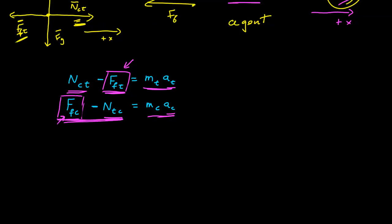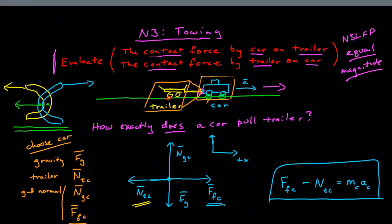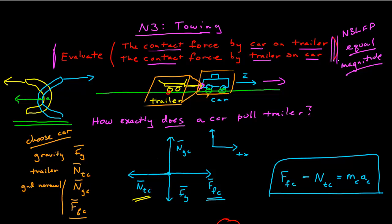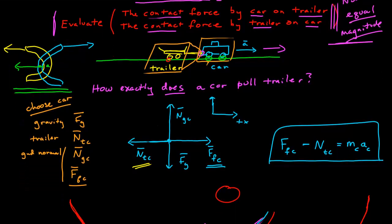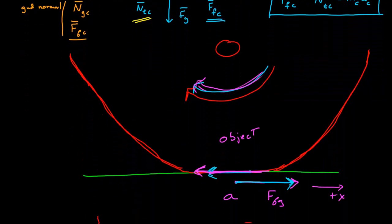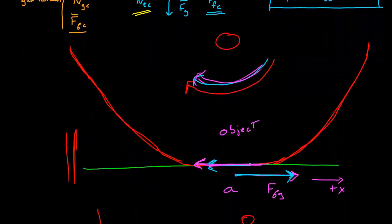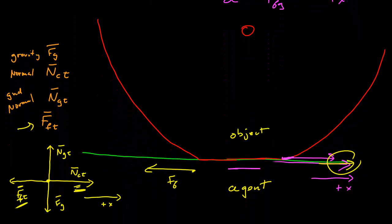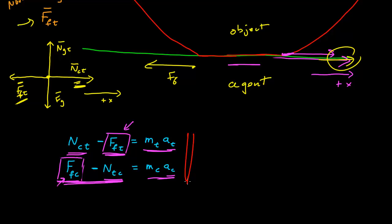This is a good example to go through because it highlights one huge misconception: many students think that because the car is pulling the trailer and accelerating forward, the car must exert a greater force on the trailer. That's just not true — those are Newton's third law force pairs. Understanding how the car can pull the trailer at all highlights how important these visualization steps are: visualizing what's going on at the hinge, at the ground, and matching what's physically happening in these systems to our models of contact forces — normal and frictional together — to get a proper understanding of the physics.